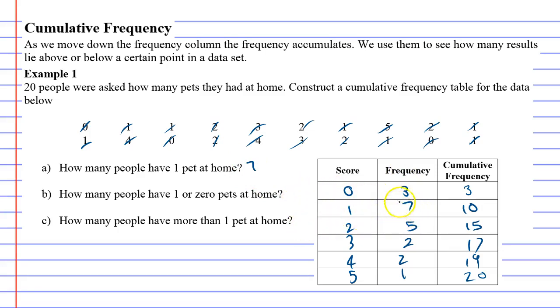For questions B and C, we can look at the cumulative frequency column to work them out. We use it whenever we get situations where - you'll notice it says up here - we use them to see how many results lie above or below a certain point in a data set.